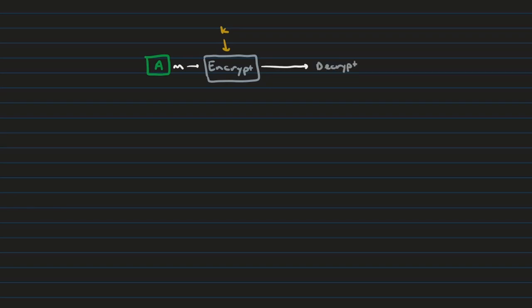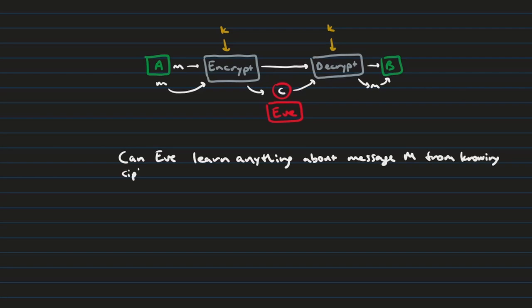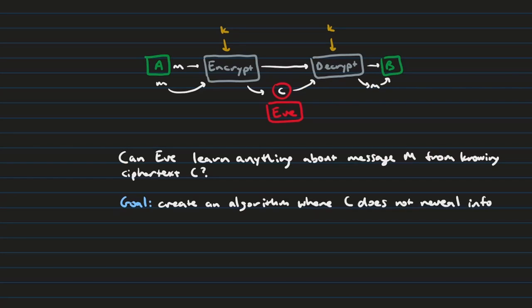Let's take a look at what Alice and Bob's channel looks like if they use cryptography. Alice has her message M, which she sends to an encryption algorithm using some shared key K that Bob knows as well. It goes across the channel and is decrypted using that exact same key K, and then Bob receives the message M. Meanwhile, what Eve sees is the message M going through an encryption algorithm, out pops the ciphertext C, and then back through the decryption algorithm, out pops the final message M. In this setup, known as a symmetric encryption scheme, all Eve sees is the ciphertext C. This leaves us with the question: can Eve learn anything about the original message knowing this ciphertext C? The overarching goal of an encryption scheme is to make sure that C does not reveal any information about the original message M.